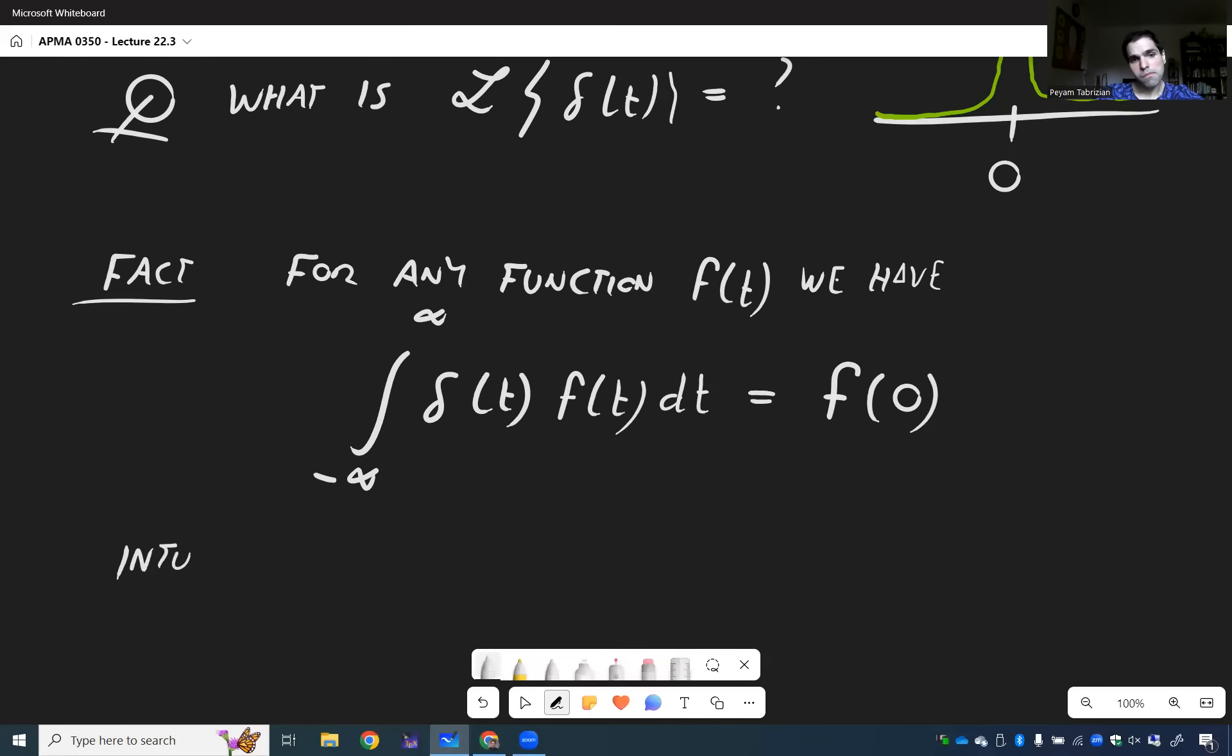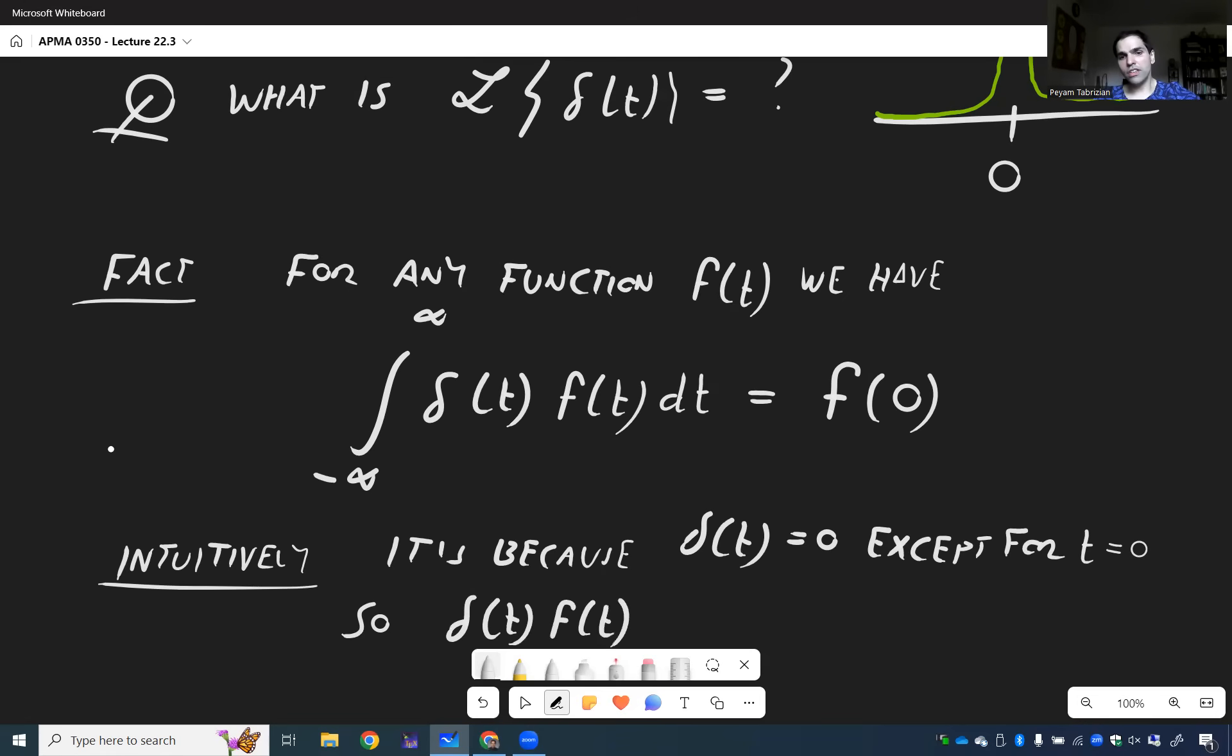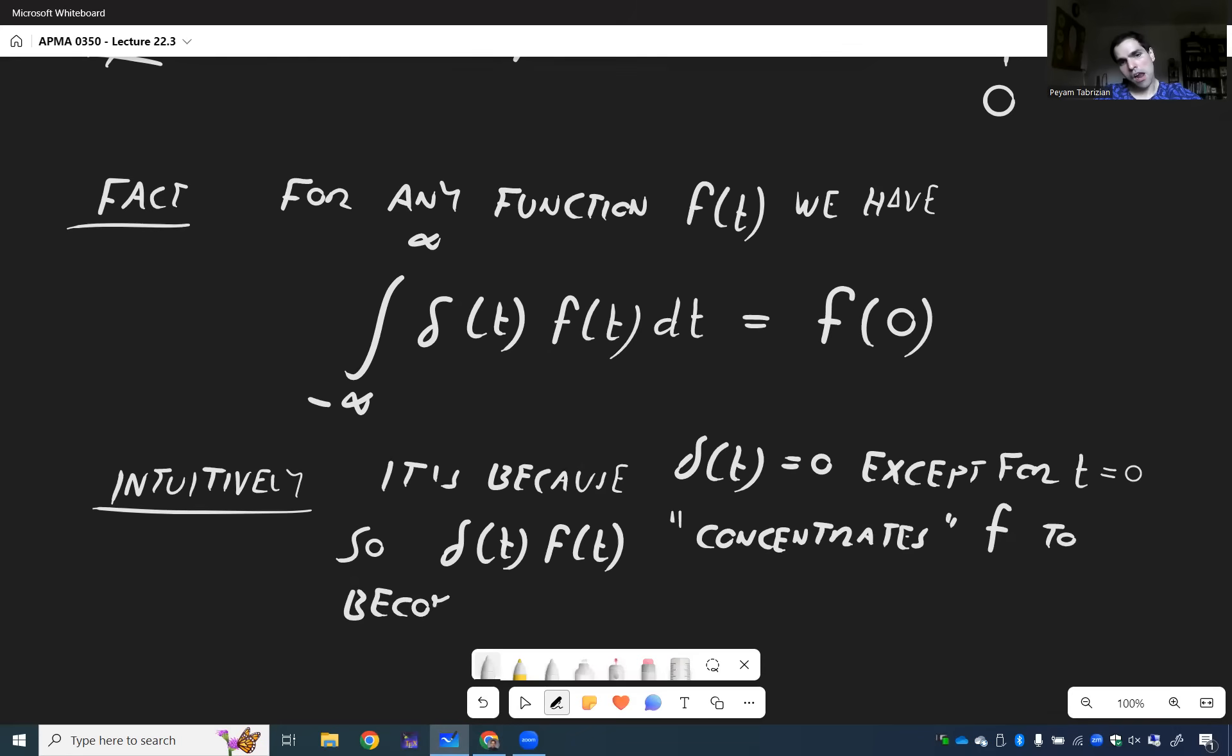And again, it's because the Dirac delta is zero except for t equals zero. So most of that integral should be zero. So really, this delta(t) times f(t) concentrates things at zero, or concentrates f to become f(0). This is sometimes called localization.